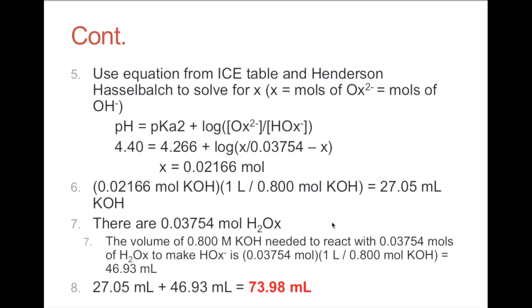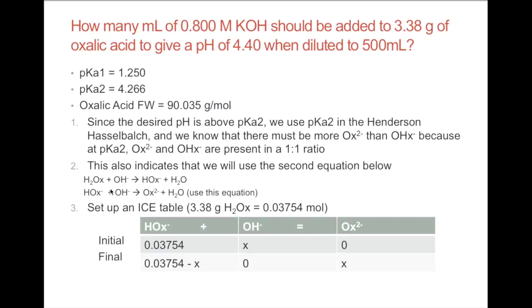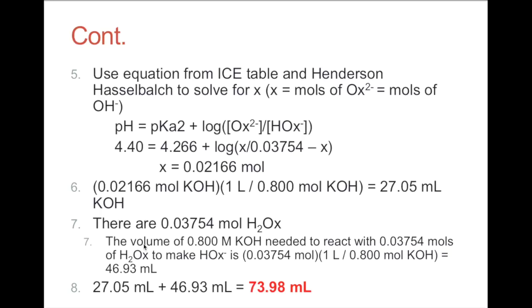However, that is not our final answer. Since our starting amount is 0.03754 moles, it's not just HOX⁻ in solution — it's also H₂OX. So we need to determine how much OH⁻ will react with that. We take the volume of 0.8 M KOH needed to react with 0.03754 moles: multiplying by 1 L / 0.8 mol gives a volume of 46.93 mL. Then we add 46.93 mL plus 27.05 mL, giving a final answer of 73.98 mL.